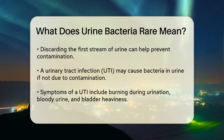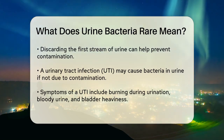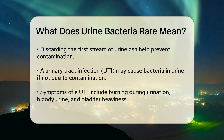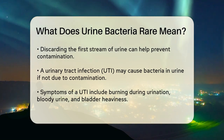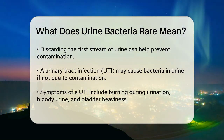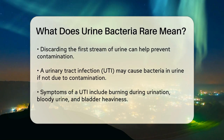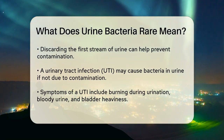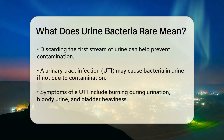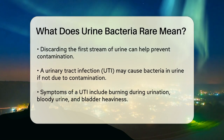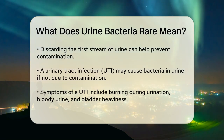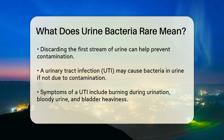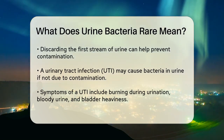Urinary tract infection (UTI): if the bacteria in the urine are not due to contamination, it could be a sign of a urinary tract infection, or UTI. A UTI is often accompanied by other symptoms such as burning or pain during urination, bloody urine, or a feeling of heaviness in the bladder. Along with bacteria, you might also see white blood cells (leukocytes) and epithelial cells in the urine.